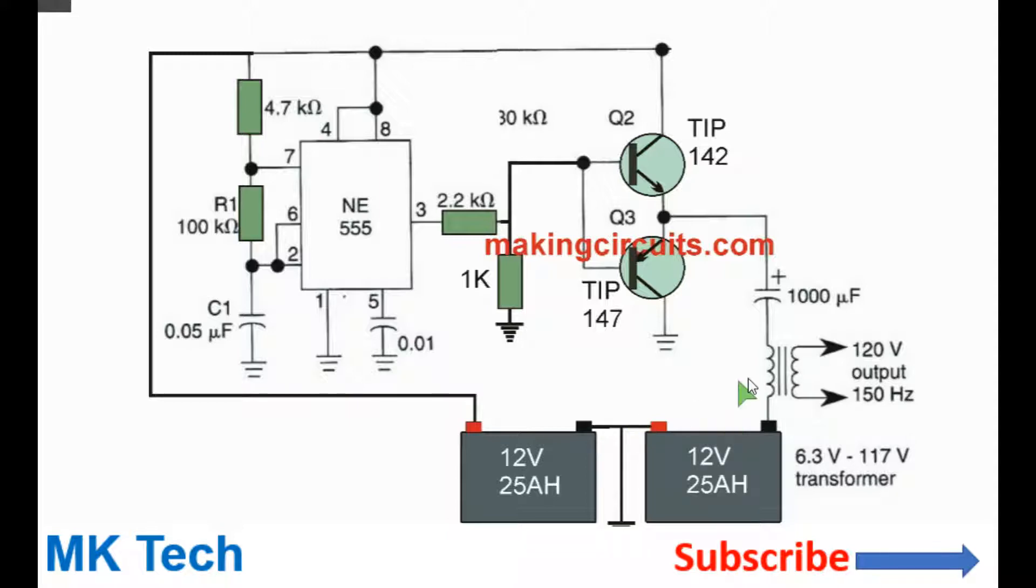Since the transformer is reset in each half cycle, to obtain more power you can parallel more of these transistors to increase the current carrying capacity as shown.